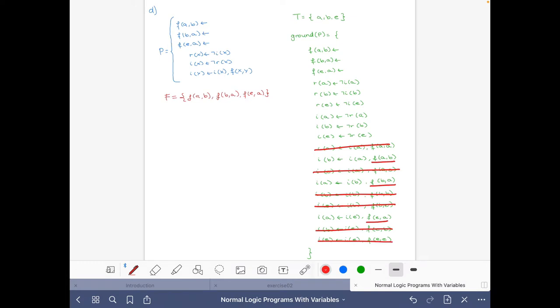And f(a,b), f(b,a), and f(e,a) will be true in every stable model, so we can simplify the rules and just think about this part. From this part of the program we just have to consider these three small rules, these facts, and then we also have to care about these six rules here that have negation.